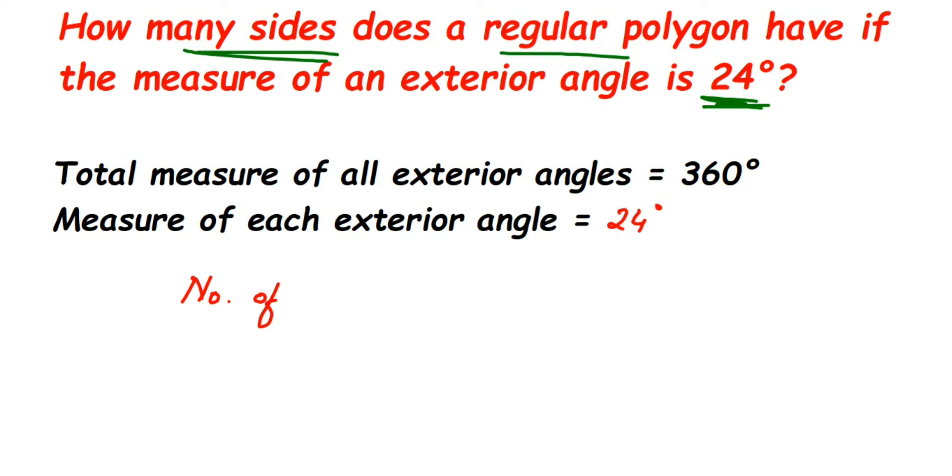So measure of each exterior angle here is 24 degrees. To get the number of sides, I'm going to divide. Number of sides will be equal to 360 degrees divided by 24 degrees. And then you have to cancel this - you can cancel this in the four table.